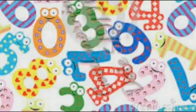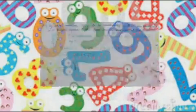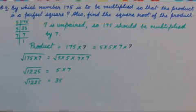Good morning students. Let's continue exercise 3.3 question number 4. By which number 175 is to be multiplied so that the product is a perfect square? Also find the square root of the product. Here in this question two parts are given.